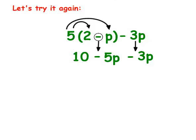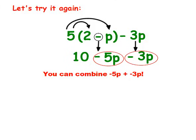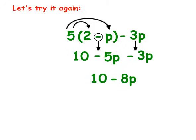I can see that I can combine some like terms. I have negative 5p and negative 3p. The signs are the same so I add them together — it's 8, and then I use the sign in front of the biggest digit, so I have negative 8p. Ultimately the answer is 10 minus 8p.